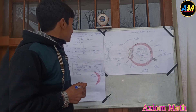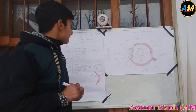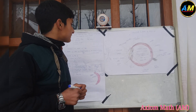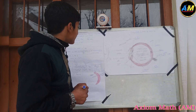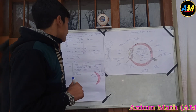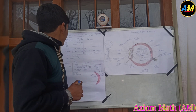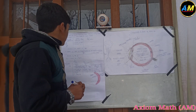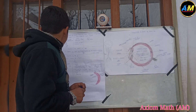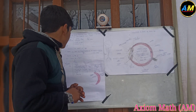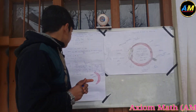The third eyelid in humans is a vestigial organ called the nictitating membrane. The eye has three layers: tunica fibrosa, tunica vasculosa, and tunica nervosa.